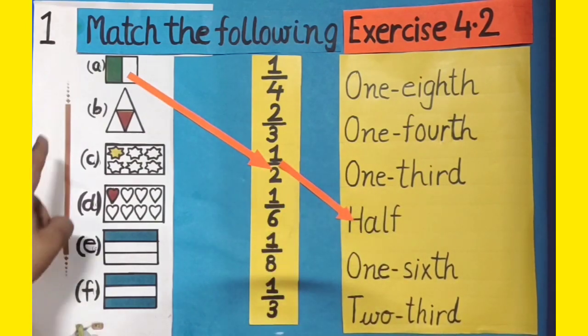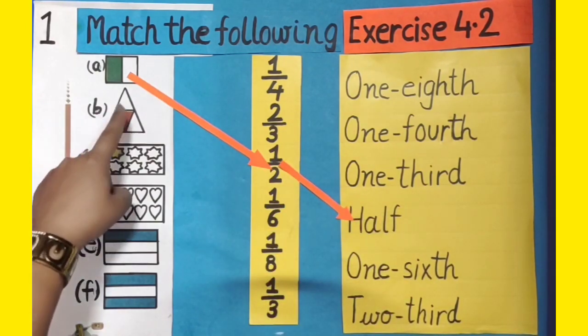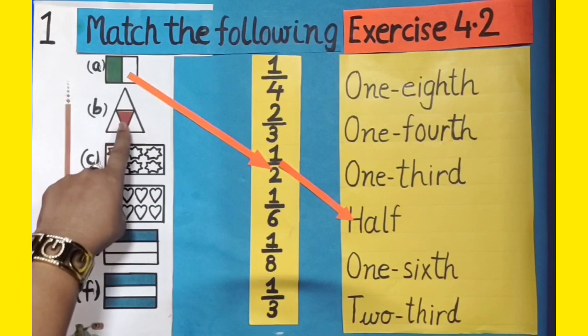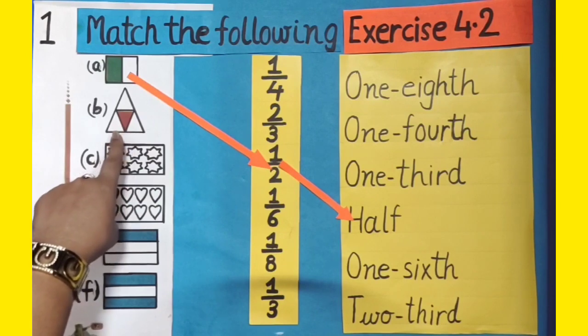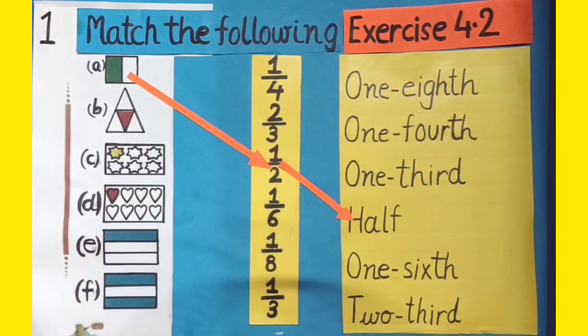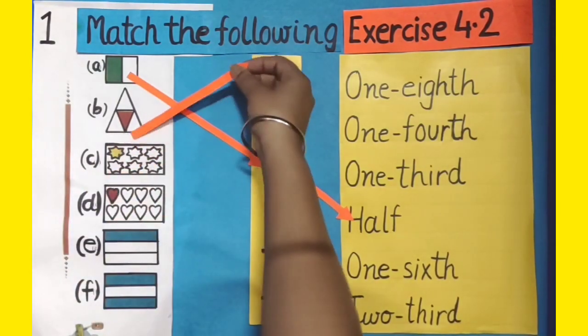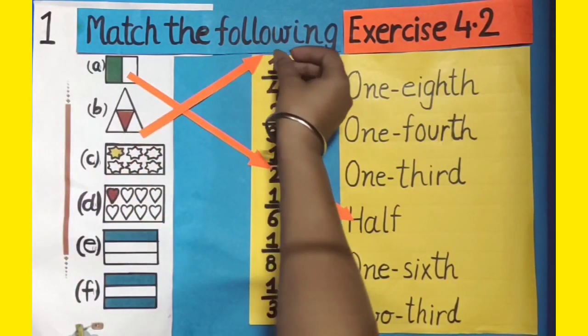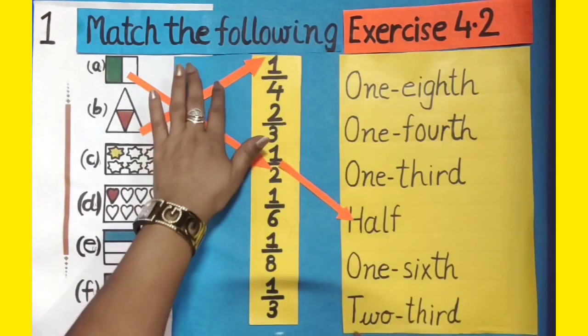In part B, out of 4 equal parts, one part is colourful. So its fraction form will be 1 by 4. Let's match these two.